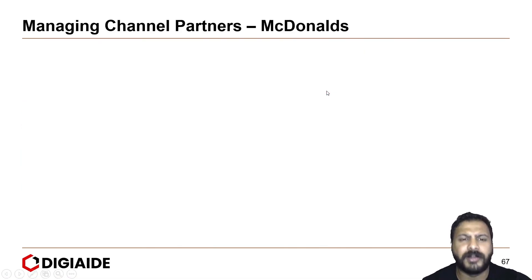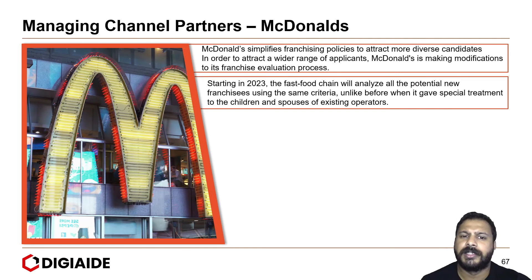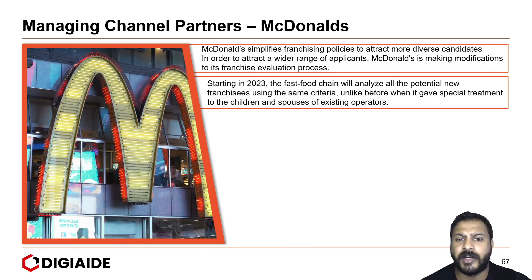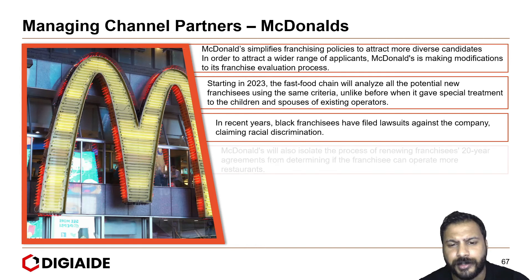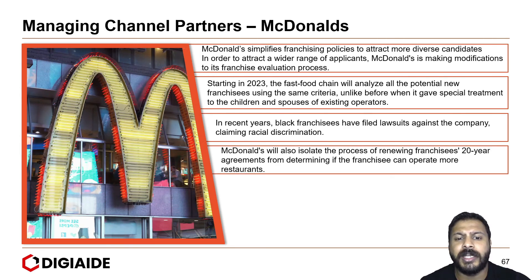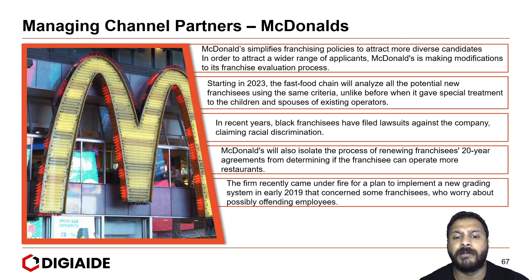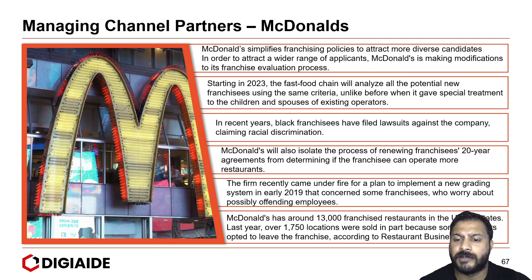Finally, some case studies in managing your channel partners. The first is McDonald's. McDonald's simplifies franchising policies to attract more diverse candidates. Starting in 2023, the fast food chain analyzed all potential new franchises under the same criteria, unlike before when it gave special treatment to children and spouses of existing operators. In recent years, Black franchisees have filed lawsuits against the company claiming racial discrimination. McDonald's also isolated the process of renewing franchises' 20-year agreements from determining if the franchisee can operate more restaurants. The firm recently came under fire for a plan to implement a new grading system in early 2019 that concerned some franchisees who worry about possibly offending employees. McDonald's has around 13,000 franchise restaurants in the United States, and last year over 1,750 locations were sold in part because some operators opted to leave the franchise.